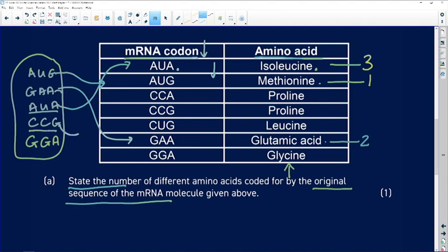We check out CCG. Here we go. CCG is going to code for proline. There's our fourth different kind of amino acid. Then we come to GGA. Here it is. And that codes for glycine. Different to isoleucine, different to methionine, different to proline, glutamic acid, so glycine is amino acid number five. State the number of different amino acids. It's going to code for five amino acids.